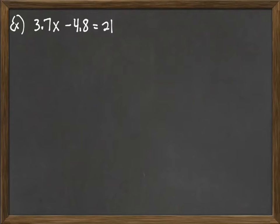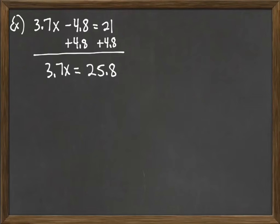Here we just have a variable term and a number term, so we want to get the variable term by itself. Let's move that 4.8 over to the other side. When we do that, we're left with 3.7x equals 25.8.